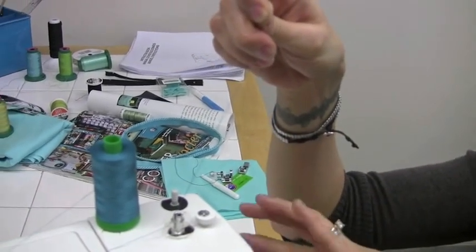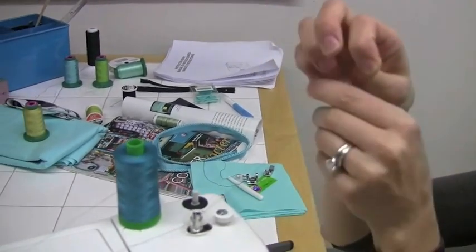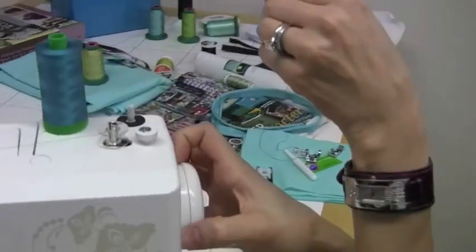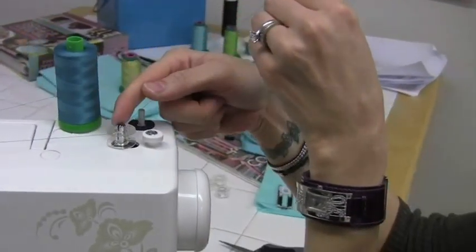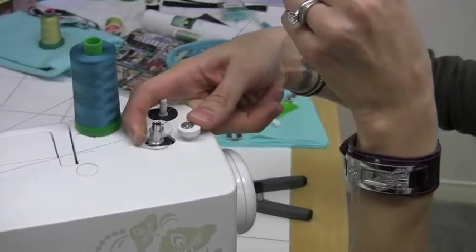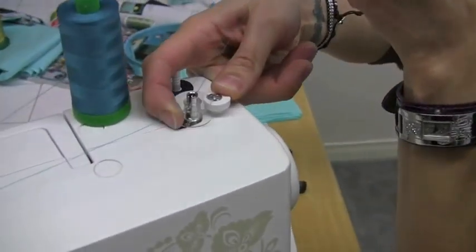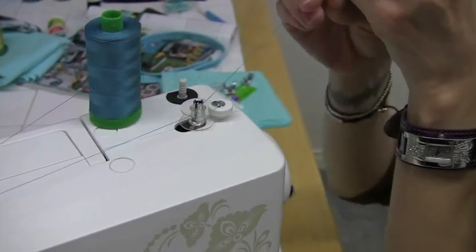You have to remember to pull the hand wheel out and you're going to hear it click, and then move this over to the right and you'll hear it click as well. Now you're ready to wind your bobbin.